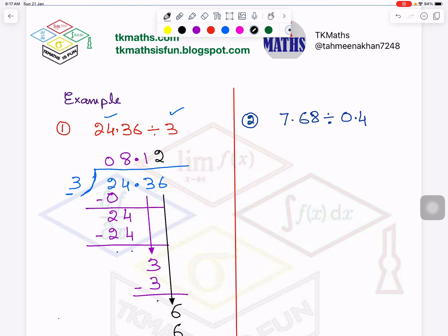Now this was a decimal number divided by integer or whole number. What about the second case where a decimal number is divided by another decimal number? I don't know the table of 0.4. Do you know it? No.